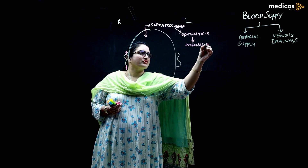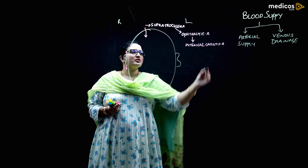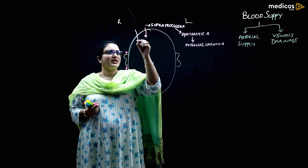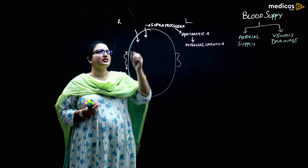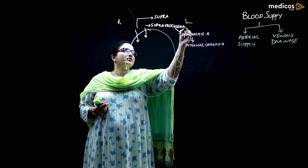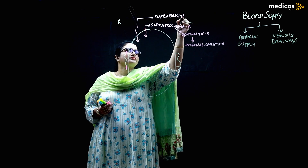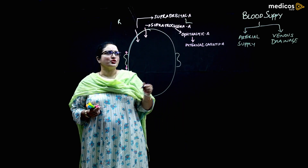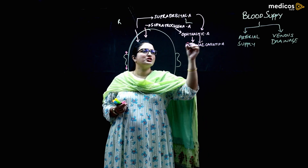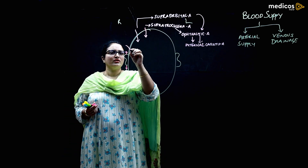Next to the supratrochlear, you have the supraorbital artery, arising from the supraorbital region. The supraorbital artery is also a branch of the ophthalmic artery, which in turn is a branch of the internal carotid artery. Just in front of the ear, you have the superficial temporal artery.